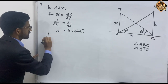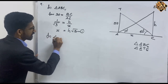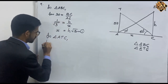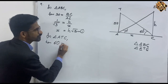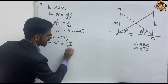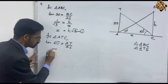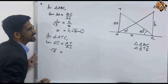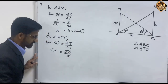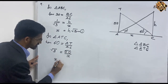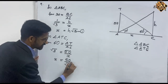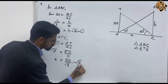From the second triangle, in triangle ATC, tan 60 equals opposite by adjacent, that is AT by AC. Tan 60 equals root 3, equal to 50 by X. So we can make an equation: X equals 50 by root 3. That is equation 2.